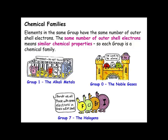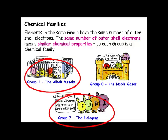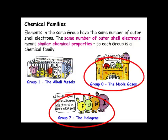Welcome to IGCSE Topic 3. We're going to be looking at three chemical families: Group 1, the Alkali Metals; Group 7, the Halogens; and Group 0, the Noble Gases.